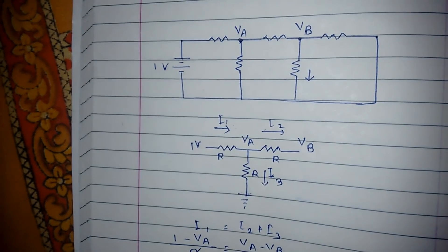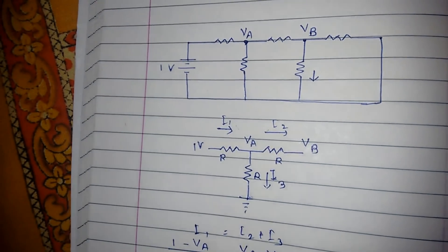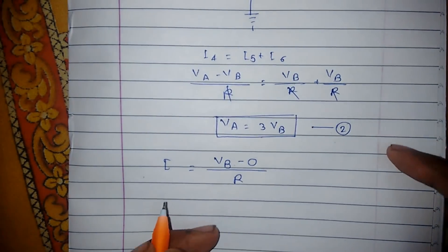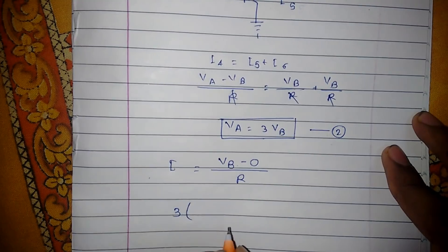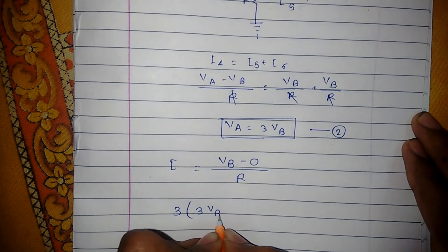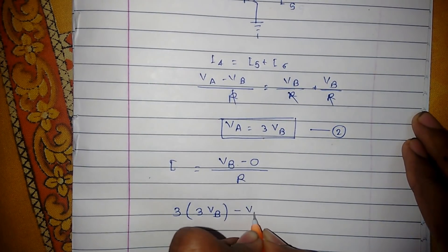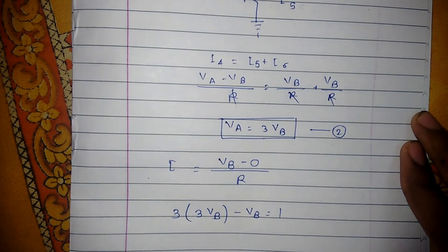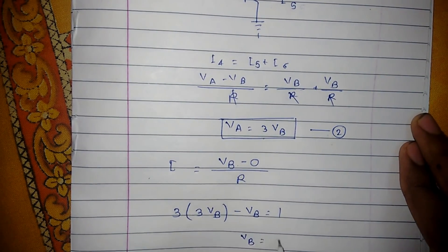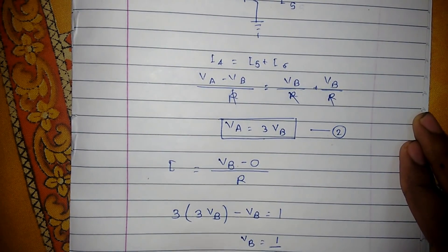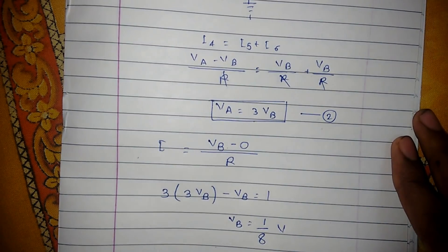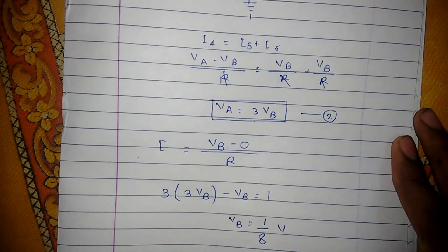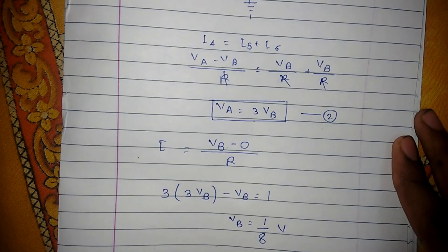Plus VA from equation 2 in equation 1, then equation 1 becomes 3 into bracket 3VB minus VB equal to 1. So VB equals 1 by 8 volts. Hence our current I is 1 by 8R.